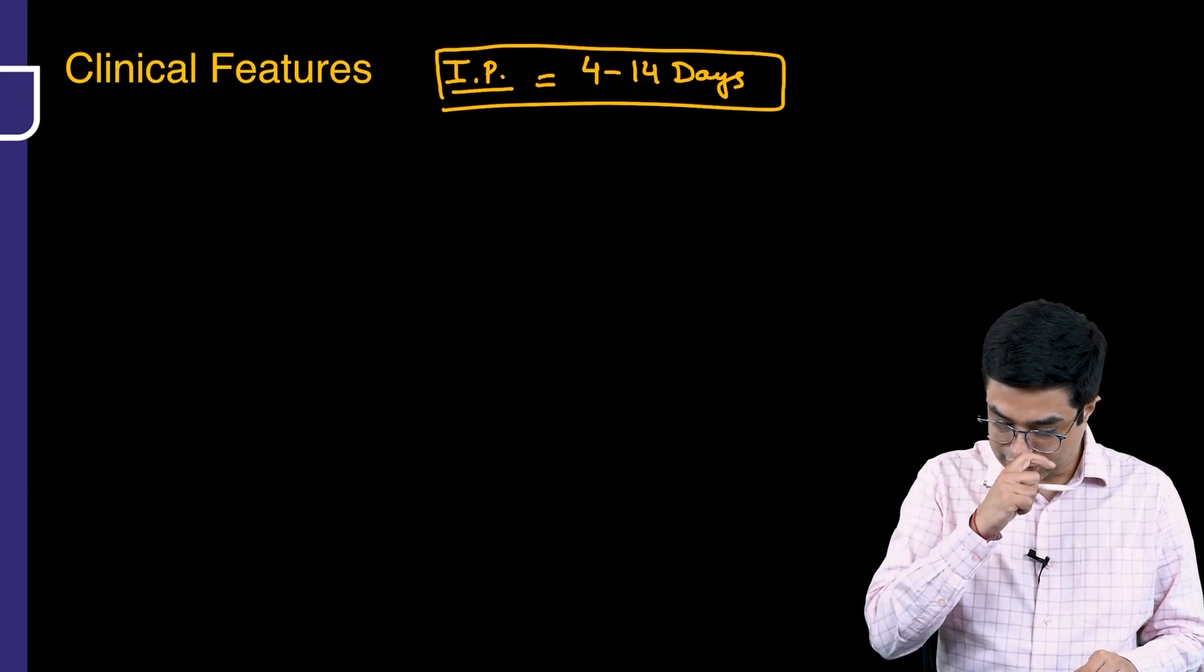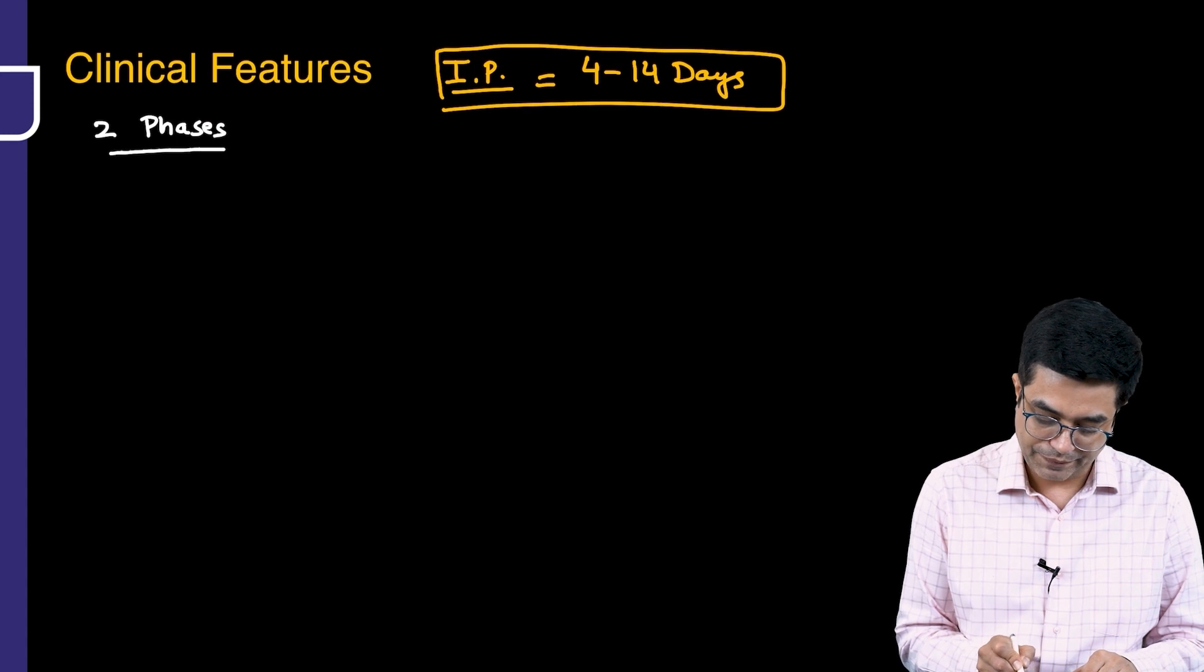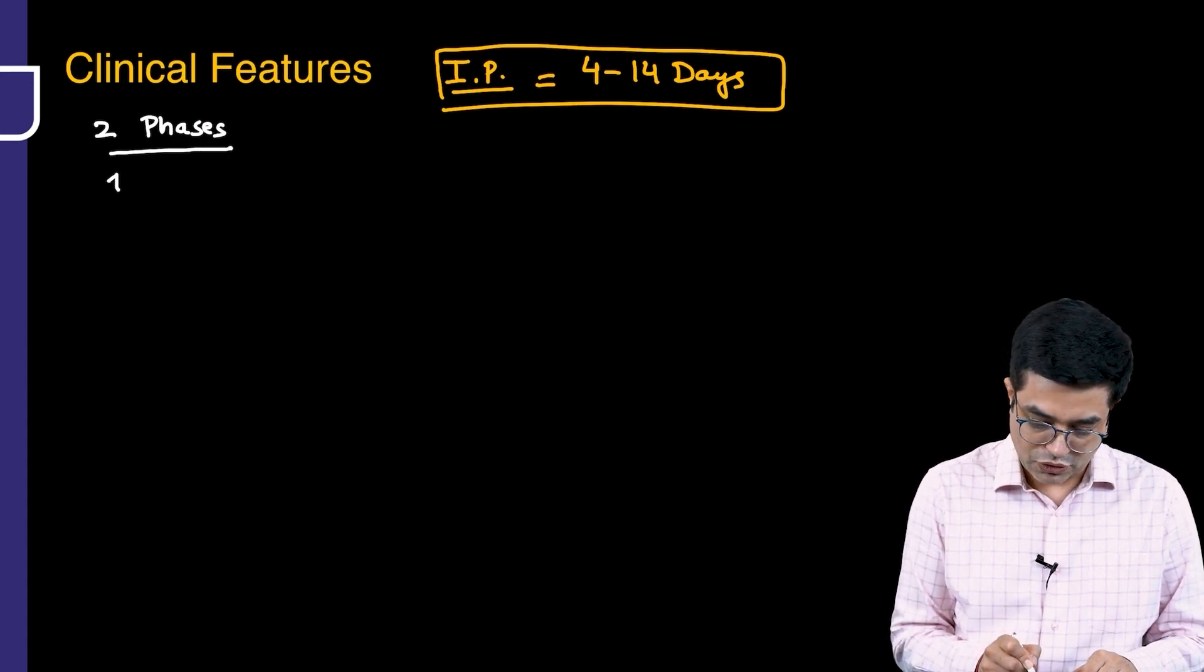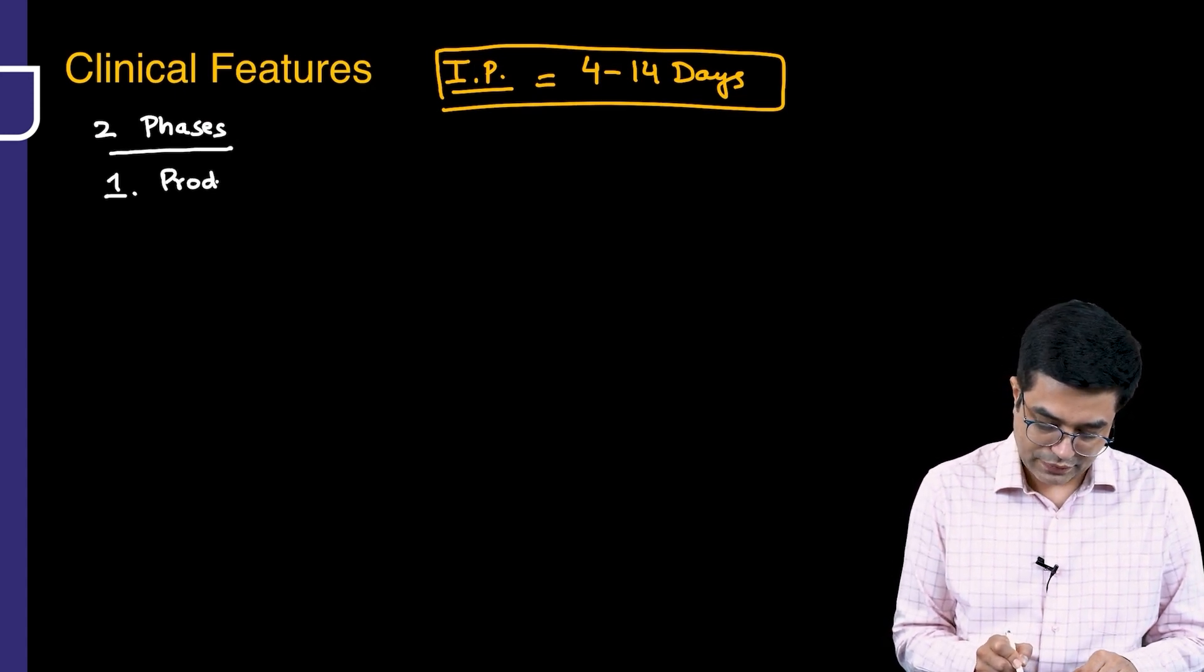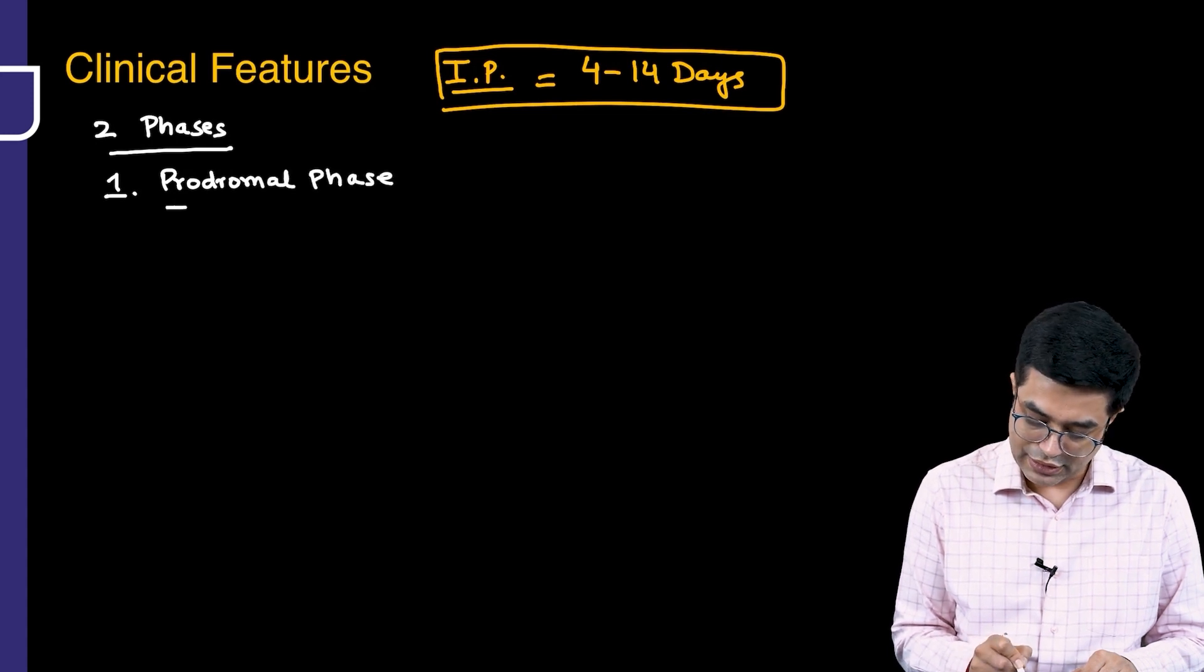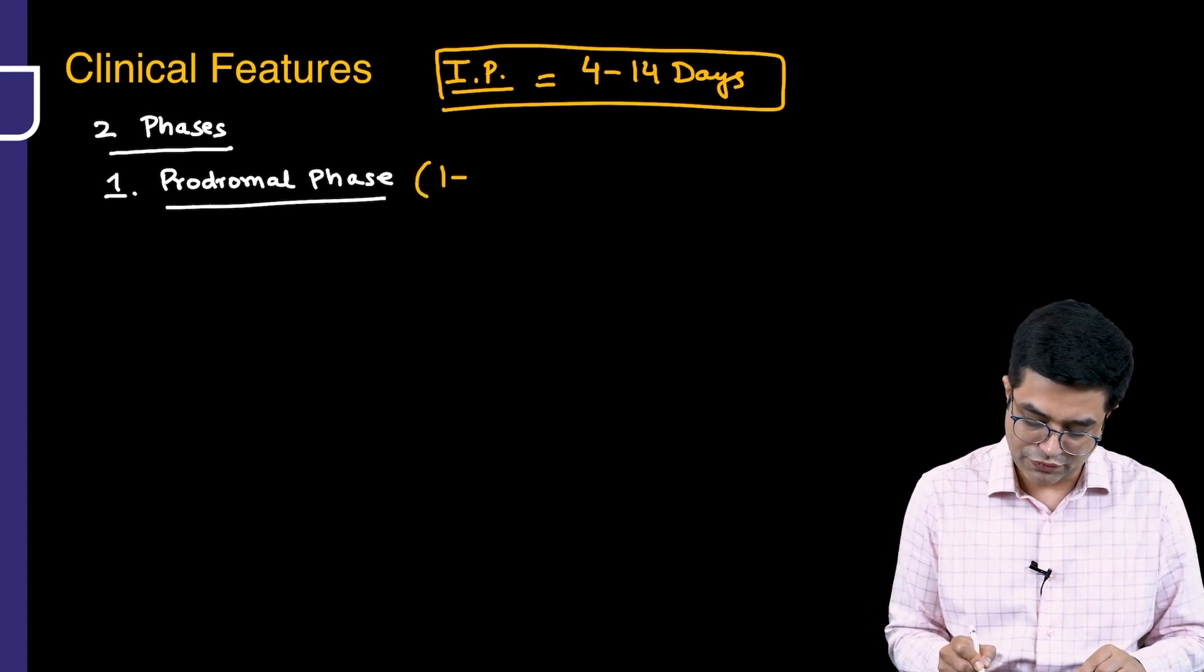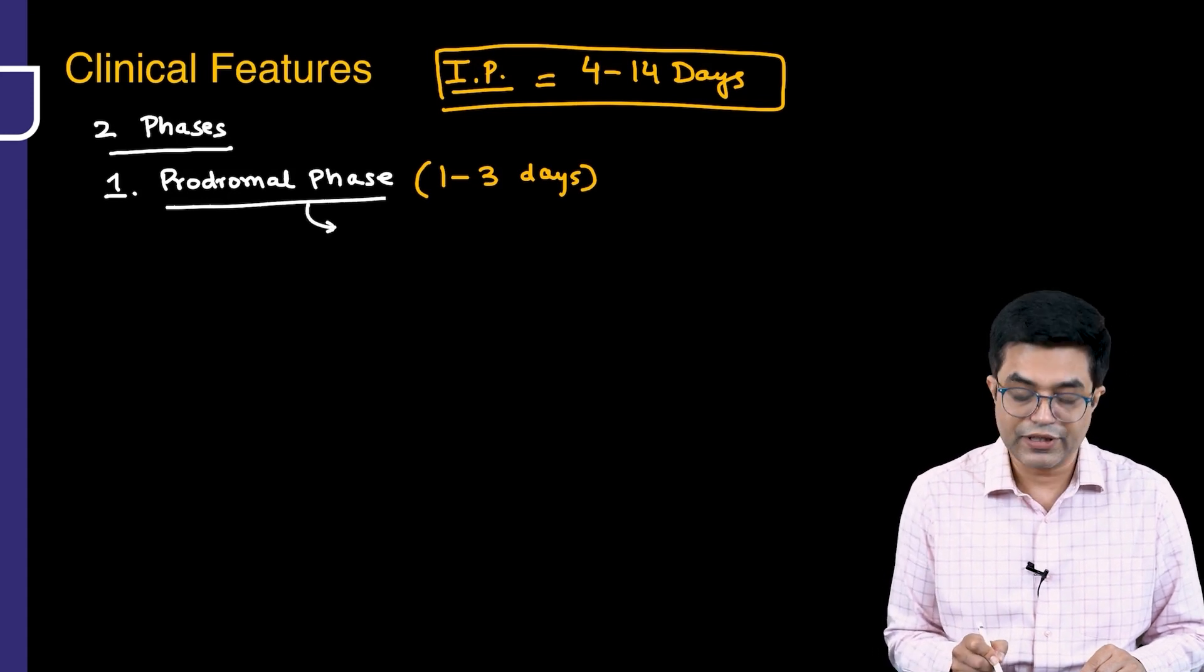When we talk about clinical features, there are two distinct phases of clinical presentation. The first phase is called the prodromal phase. Prodromal phase usually lasts from a few hours up to 3 days, with certain books giving a range of 1 to 3 days.